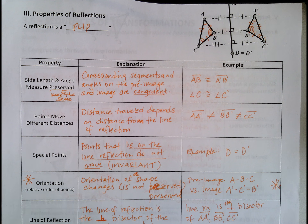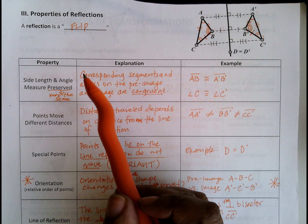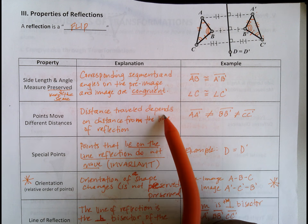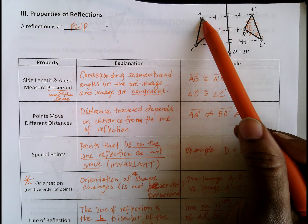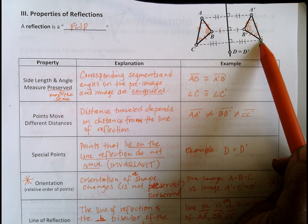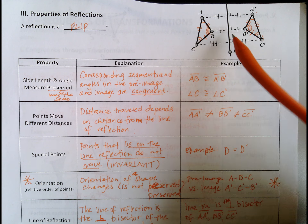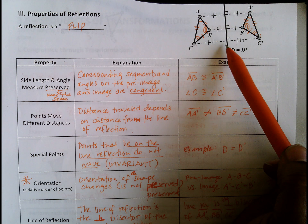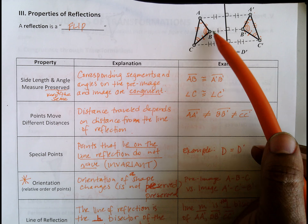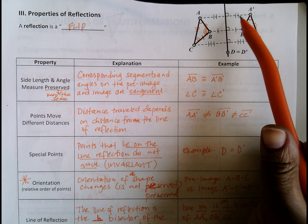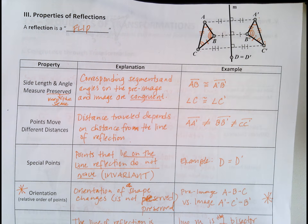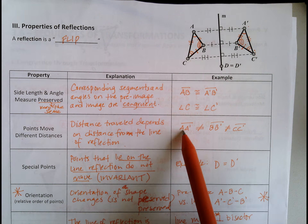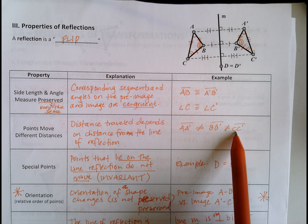The second property is that points move different distances. That means the distance traveled depends on the distance from the line of reflection. The distances from A to A prime, B to B prime, and C to C prime are not going to be the same, because in a reflection we count the number of units each point is away from the line of reflection, and that number can differ for each point. So A to A prime does not equal B to B prime, which does not equal C to C prime.